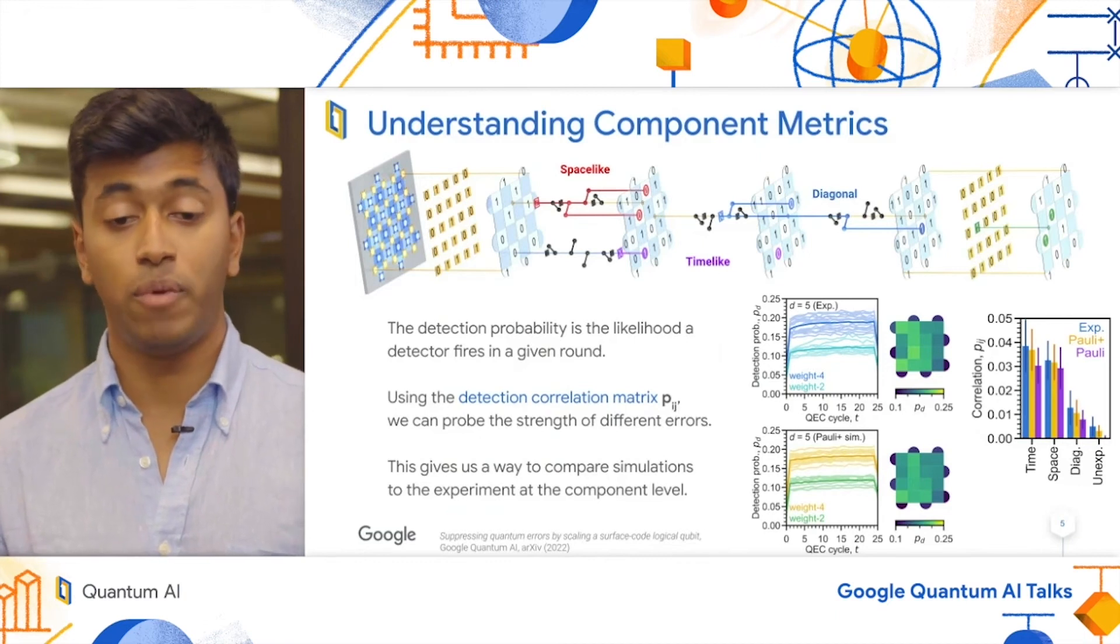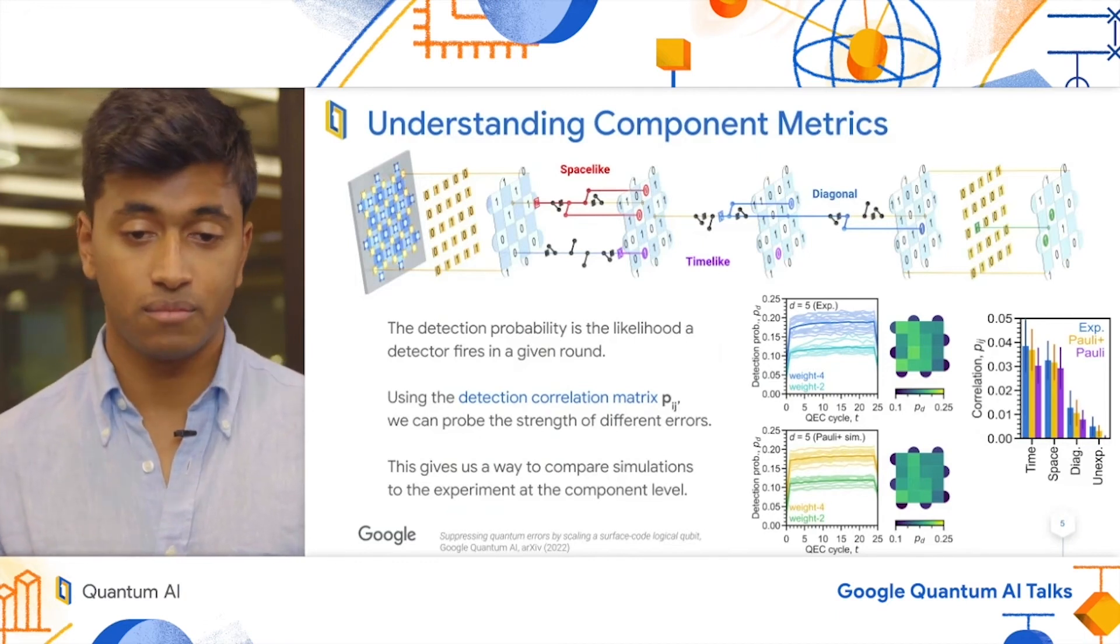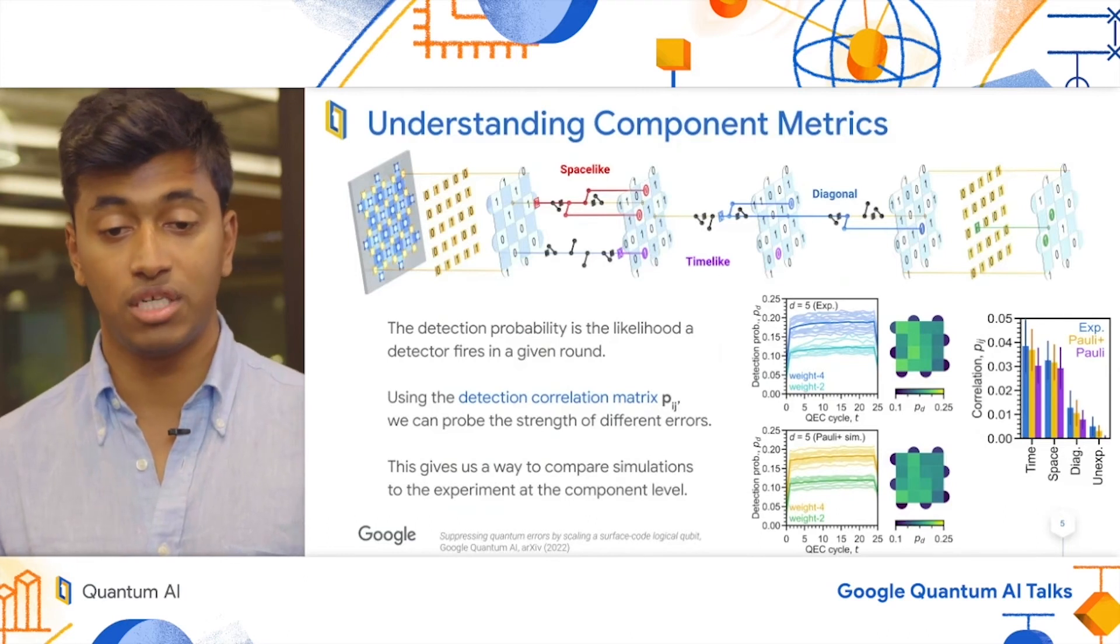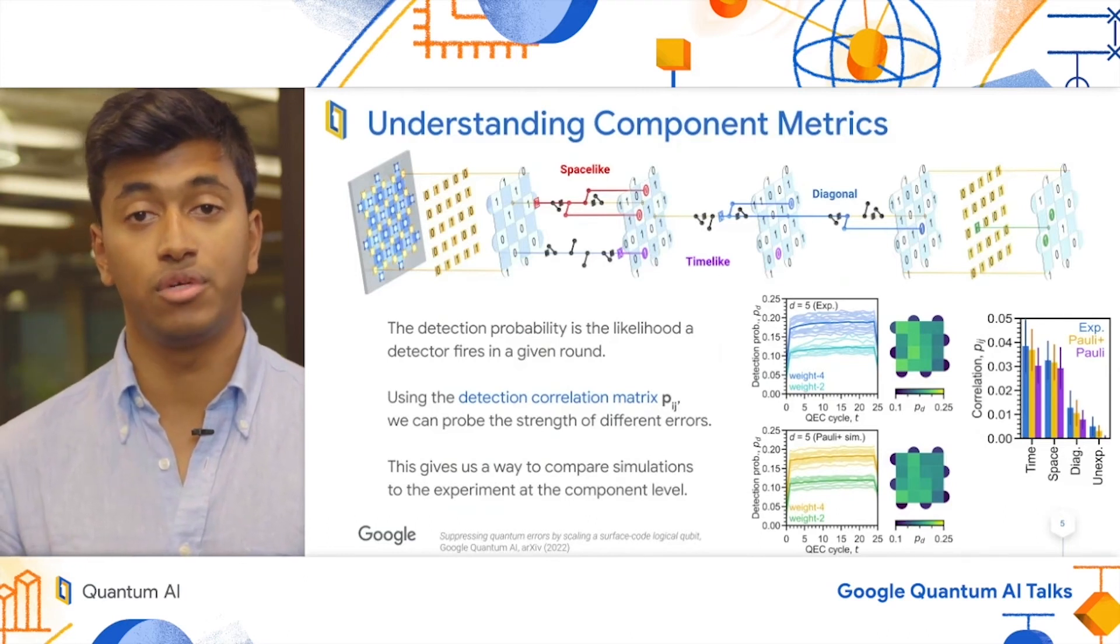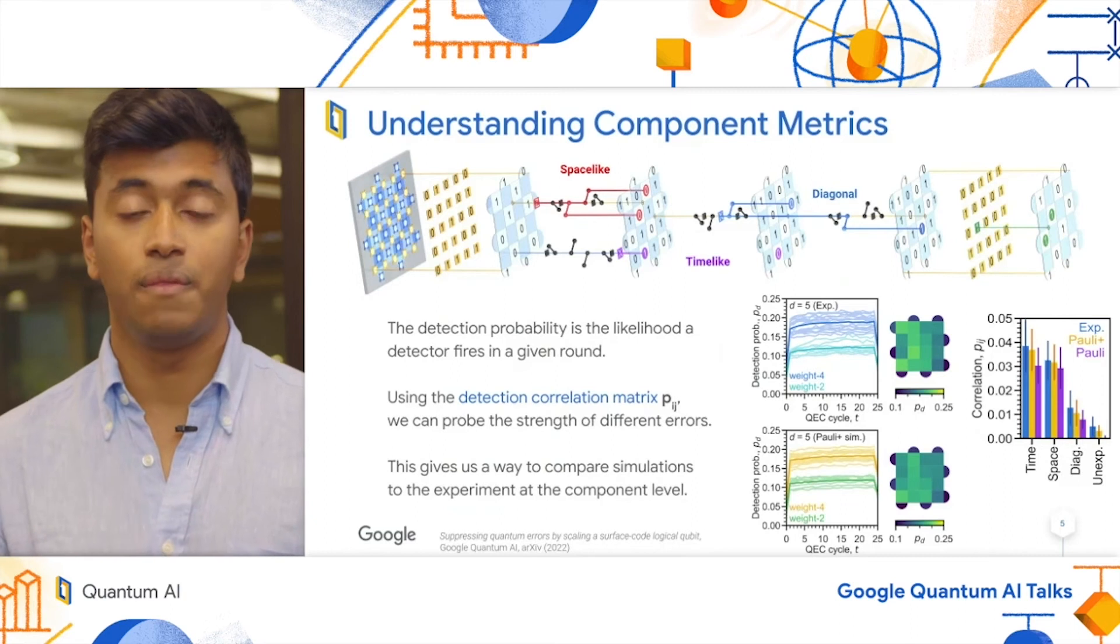is the probability that a given detector fires in a given round. You can see that the plot in blue, which is the experiment, closely matches the plot in yellow and green, which is the simulation. This gives us confidence that our error rates in our simulation are roughly on par.